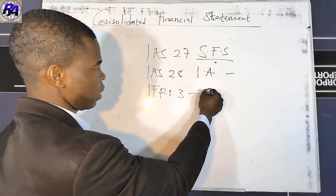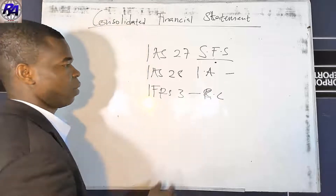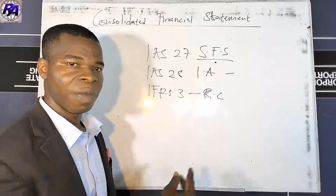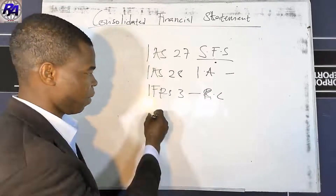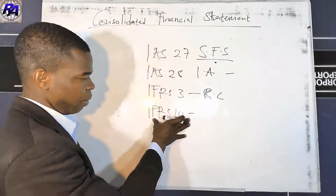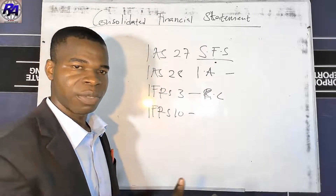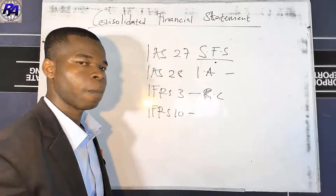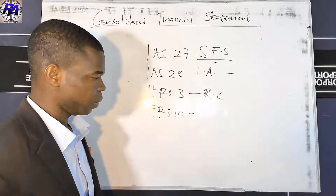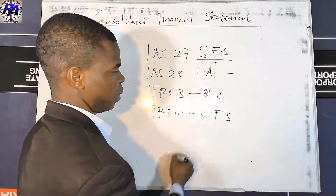Then we have IFRS 3, which deals with business combinations. IFRS 3 doesn't give the procedure on how to consolidate, but it complements IFRS 10, which is the main standard providing guidelines on the preparation and presentation of consolidated financial statements — the procedures and steps required.